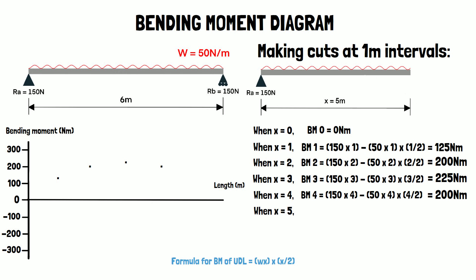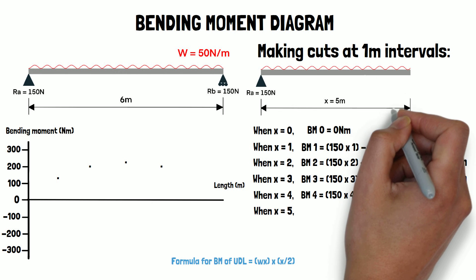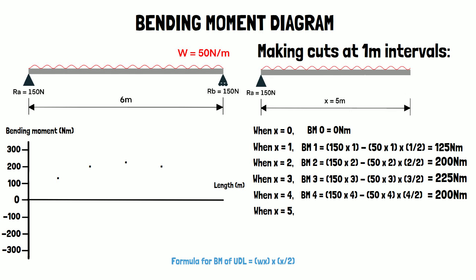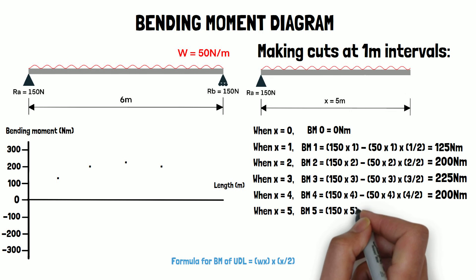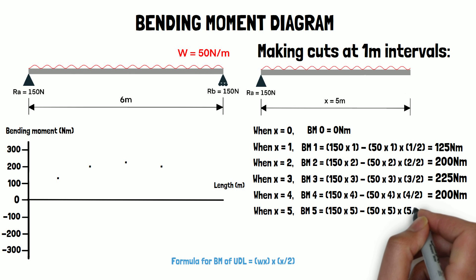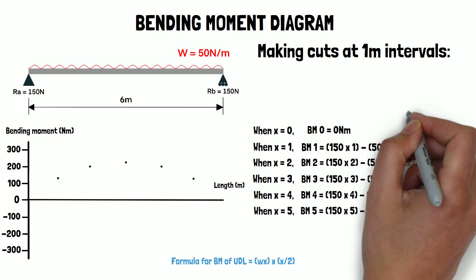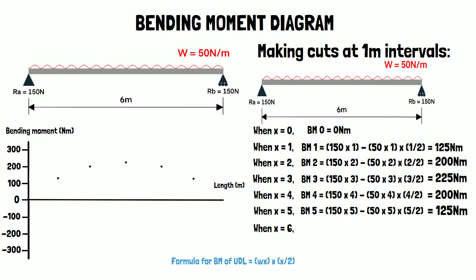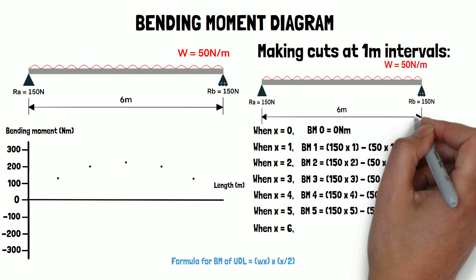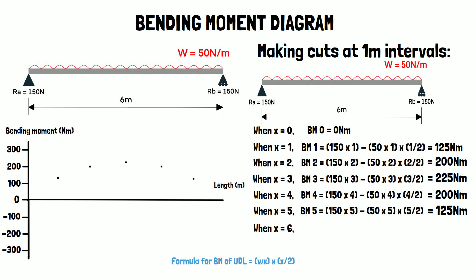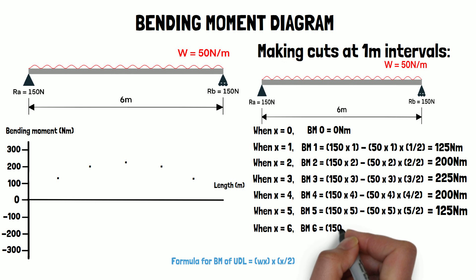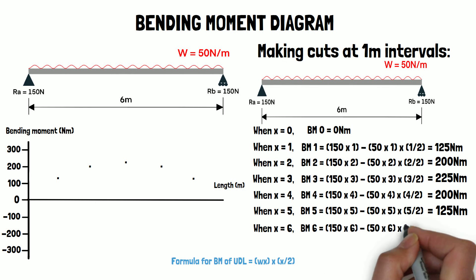When x equals 5, the bending moment is 150 times 5 minus 50 times 5 times 5 over 2, which equals 125 newton meters. When x equals 6, RA has a distance of 6 meters and the UDL spans the whole beam. The reaction force RB is not considered as it has a distance of zero meters. Therefore the bending moment is 150 times 6 minus 50 times 6 times 6 over 2, which equals 0 newton meters.